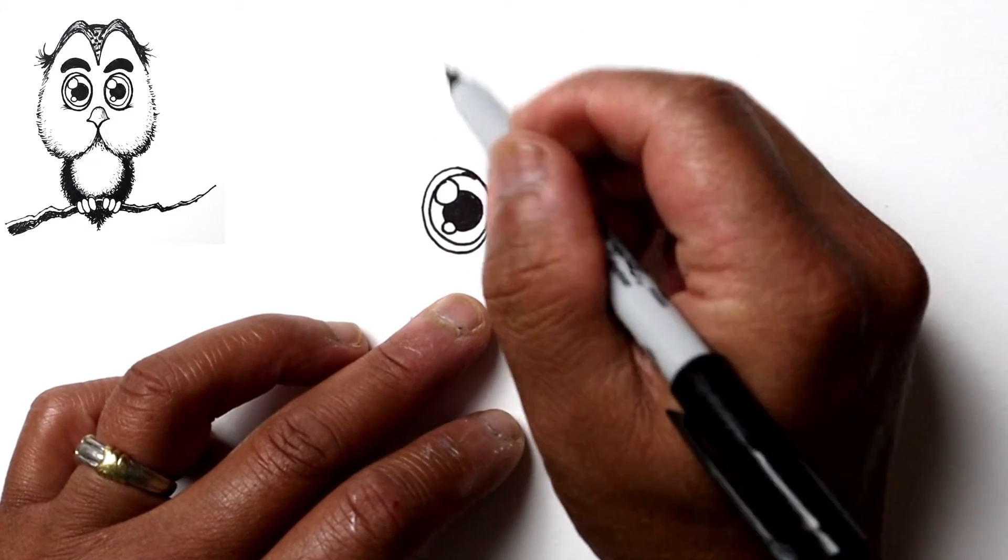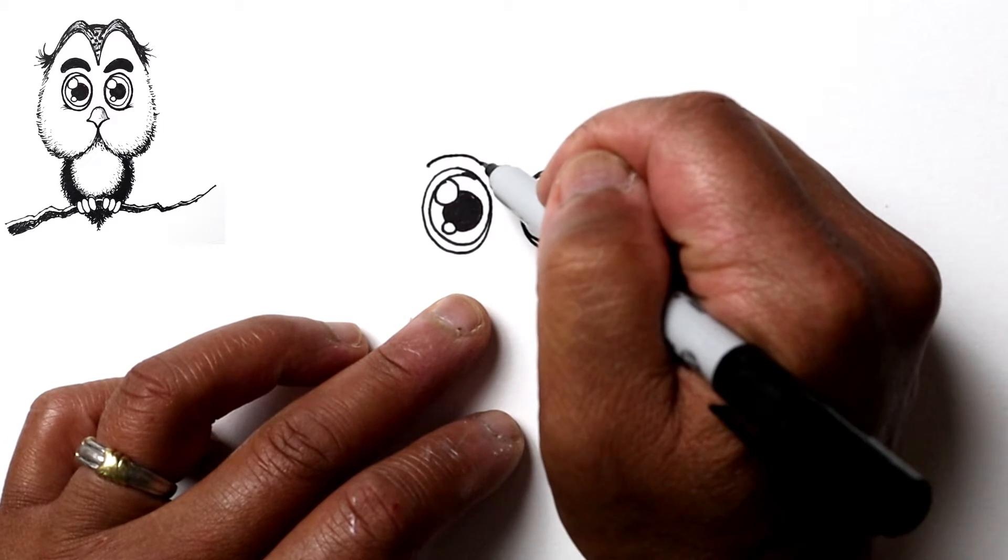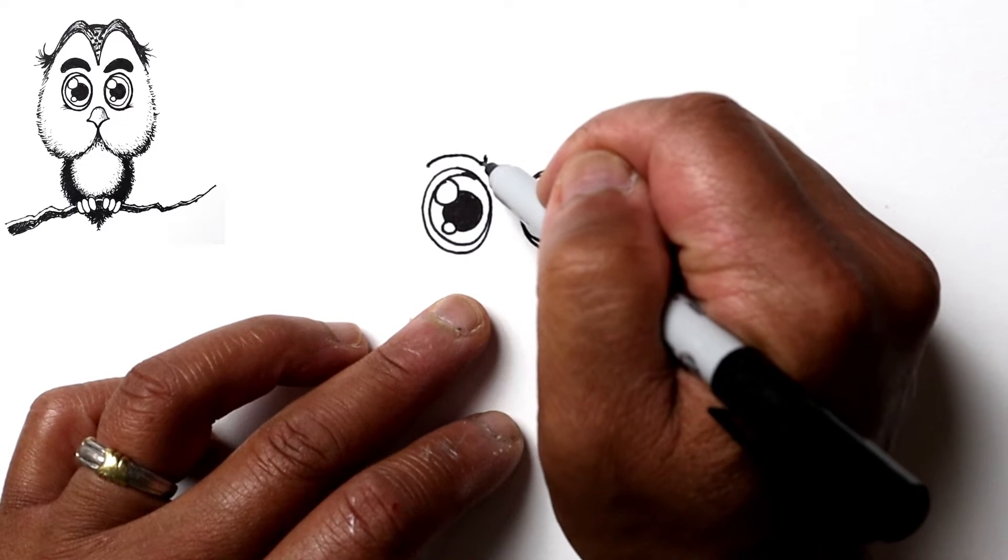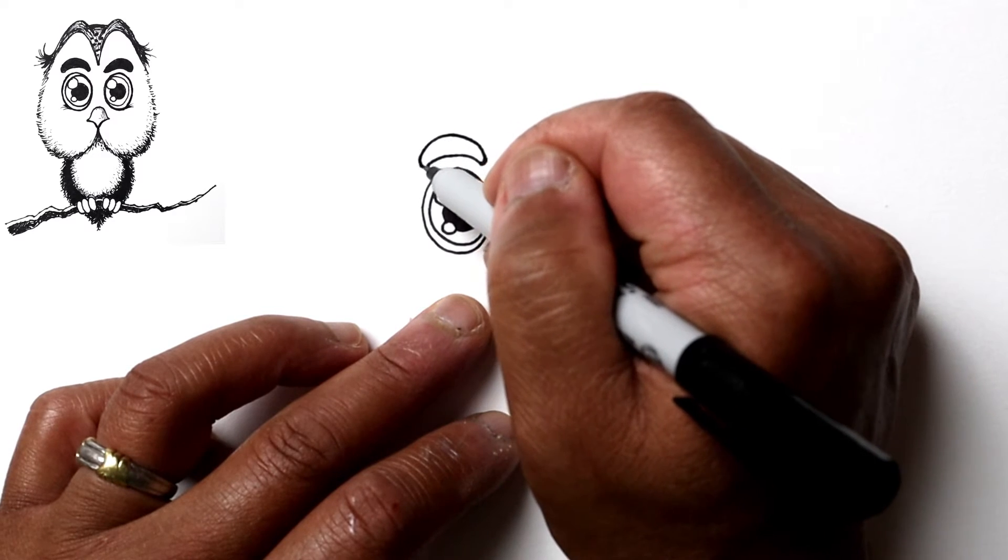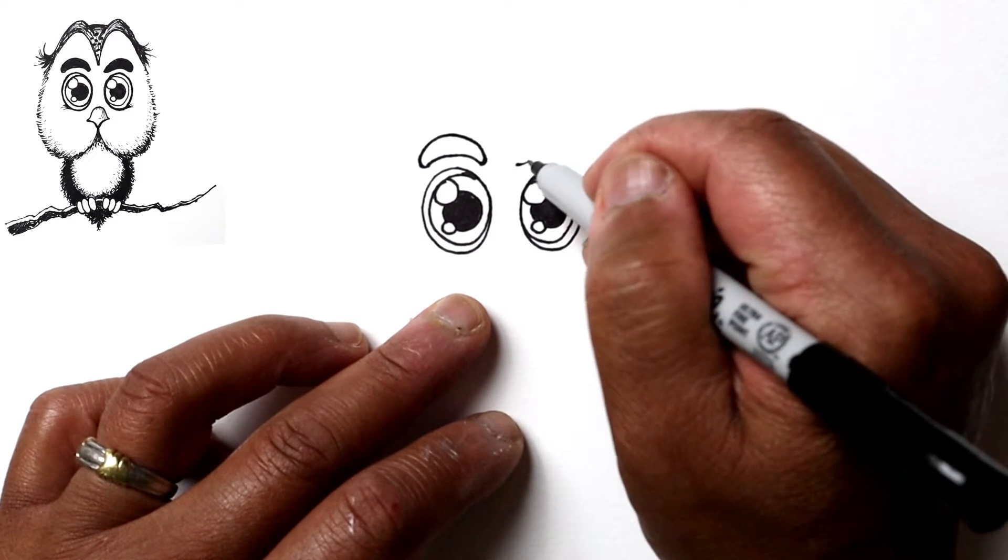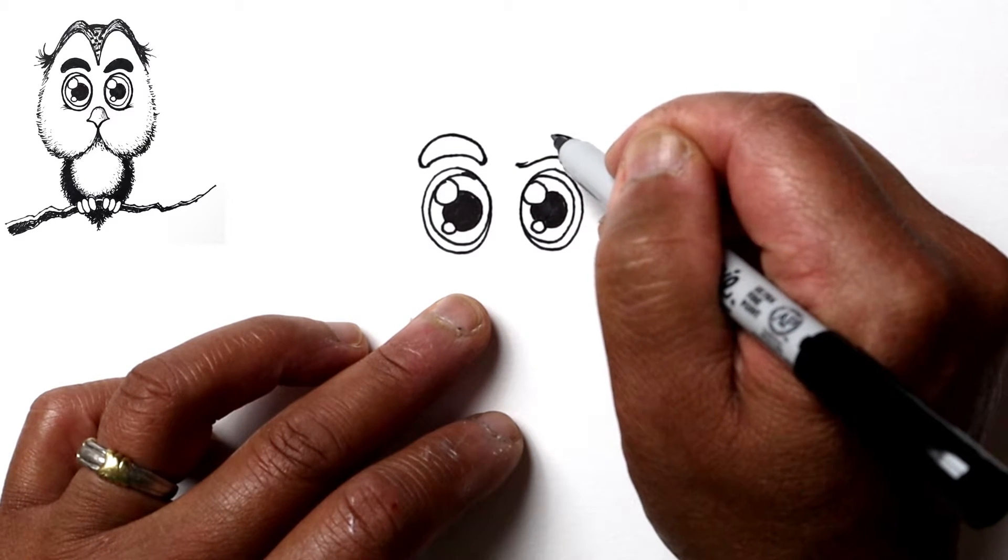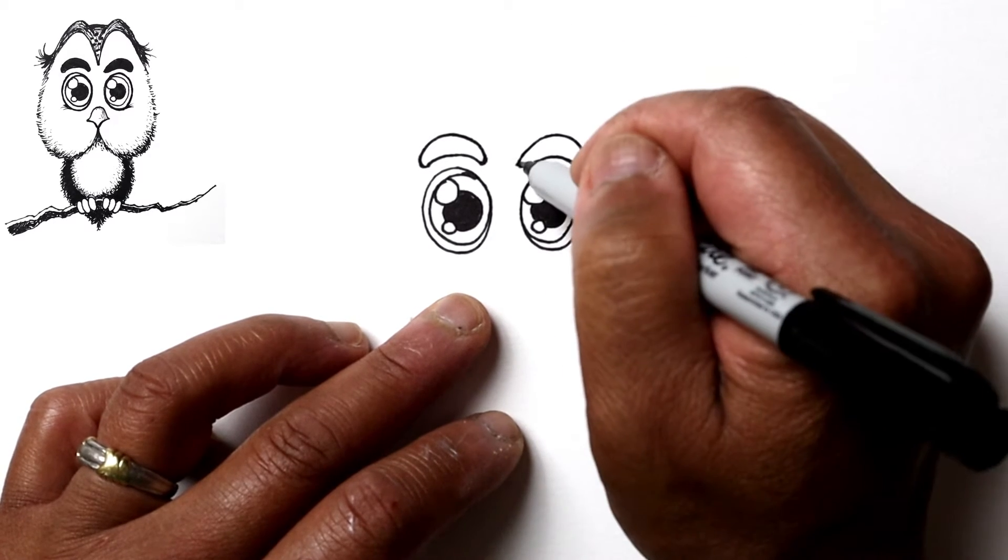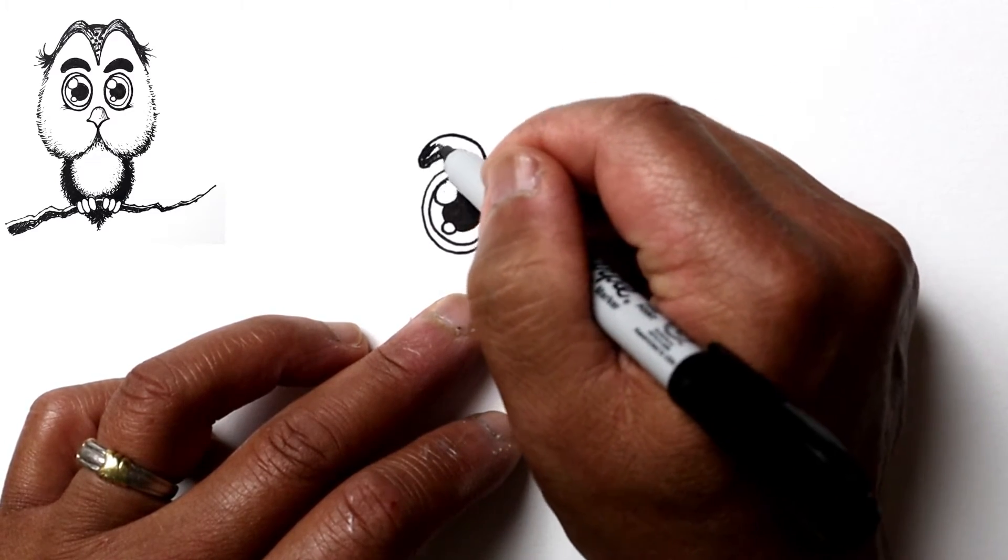Next let's draw a couple thick eyebrows, so just a line that's parallel to the upper part of the eye and then another curve. Make it look like a peanut shape, and we will also blacken that.